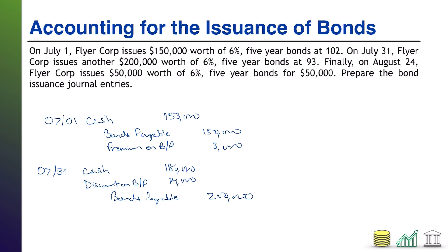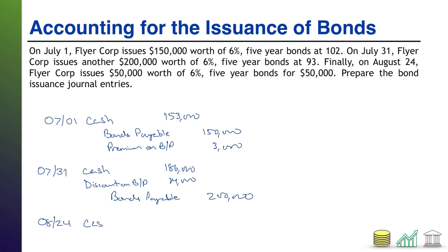Now let's move to August 24th. On August 24th, Flyer Corps issues $50,000 worth of 6% five-year bonds for $50,000. So once again we're receiving cash, and in this case it told us you're getting $50,000 in cash. The bonds payable get recorded at the face value of $50,000. In this case, there is no premium and there is no discount. If we had quoted this, we would have quoted it at $100 — you're getting 100% of the face value in cash.